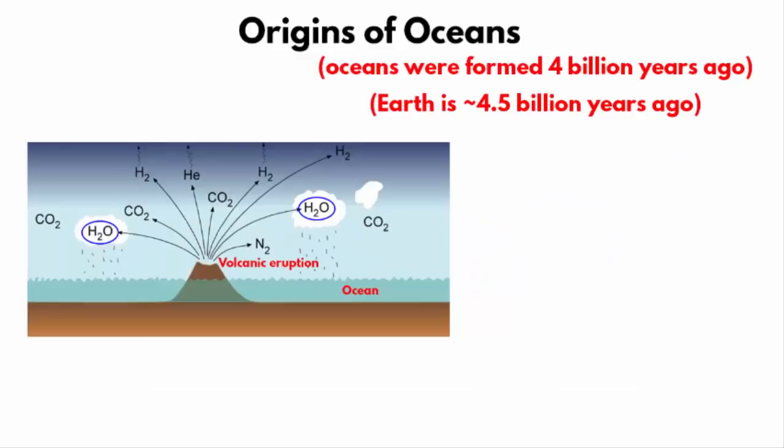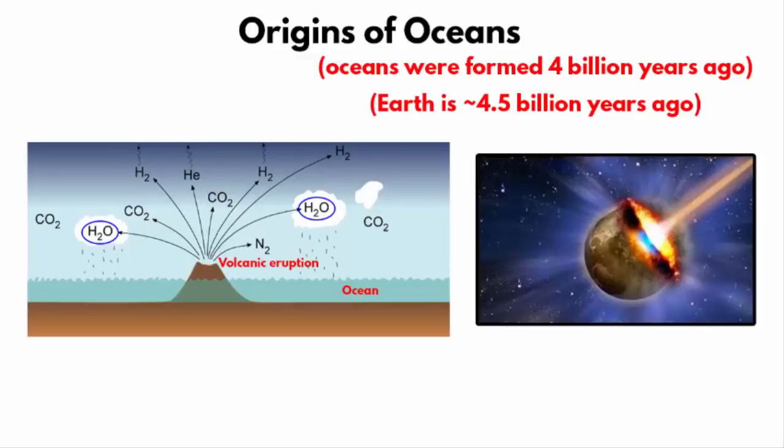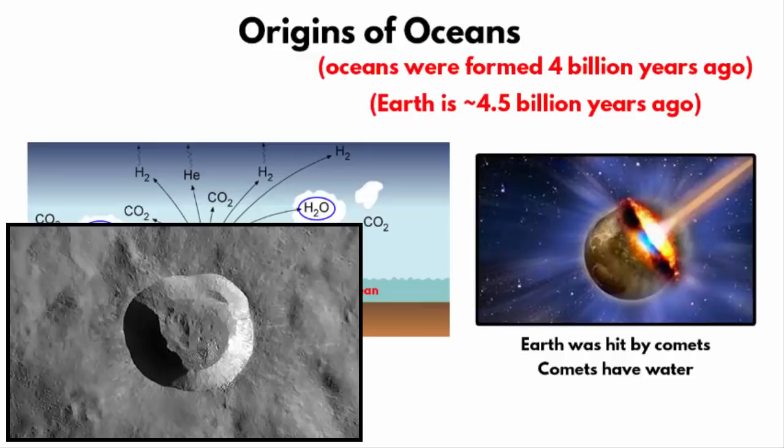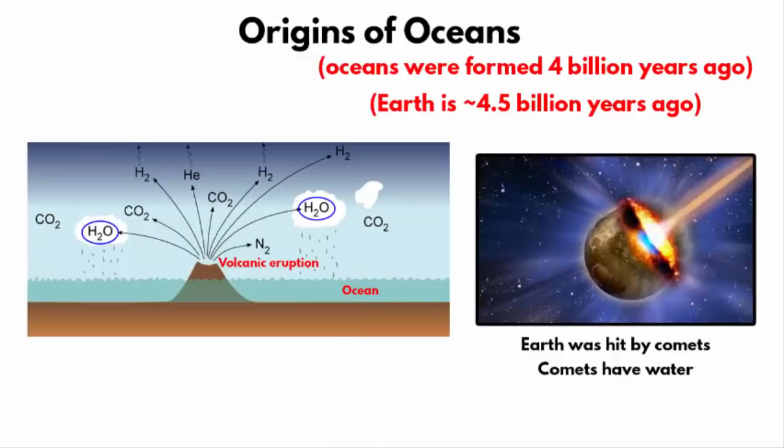And then it is also believed that some of the water came from outer space. There are comets which are filled with water. It is said that in the beginning years, the Earth was hit with thousands of comets. And this kind of bombardment not only delivered half of the ocean water that we see today, but also created huge land depressions where water accumulated. And that is how oceans were formed.